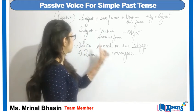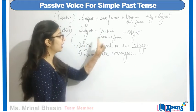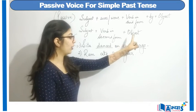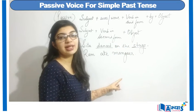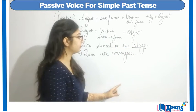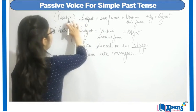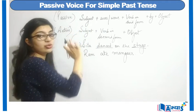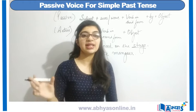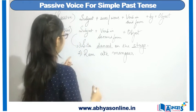Another example: Ram is the subject, 'ate' is the verb in second form (second form of eat), and 'mangos' is the object. Now if I want to convert a passive sentence into active form, let's look at an example.